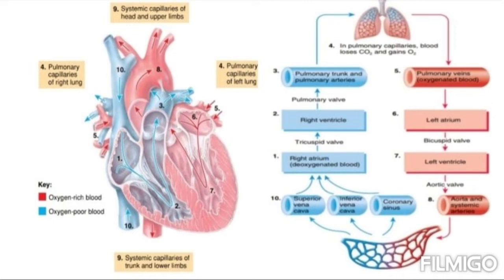Systemic capillaries facilitate the exchange of nutrients and gases across their thin walls. The blood unloads oxygen and picks up CO2. The blood then enters systemic venules, which carry deoxygenated blood away from the tissues and merge to form larger systemic veins. Ultimately, the blood flows back to the right atrium, where the right side of the heart is the pump for the pulmonary circulation.